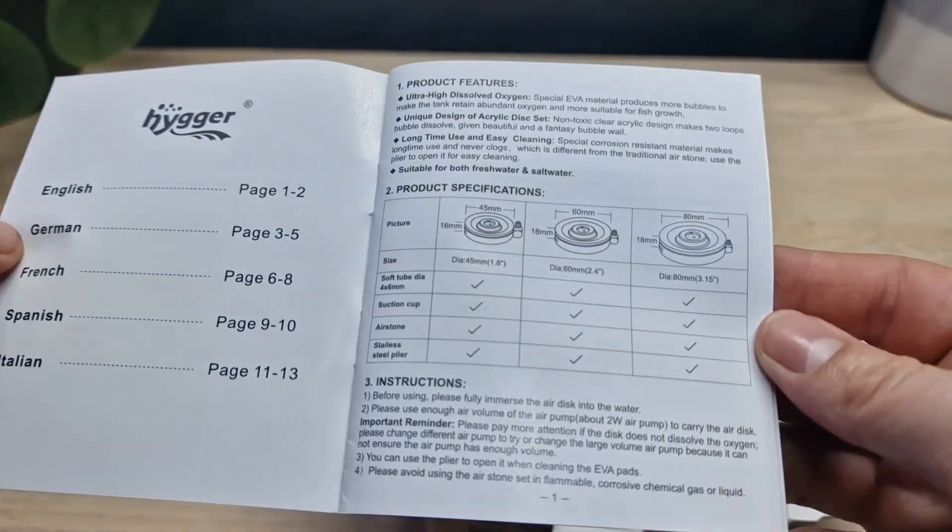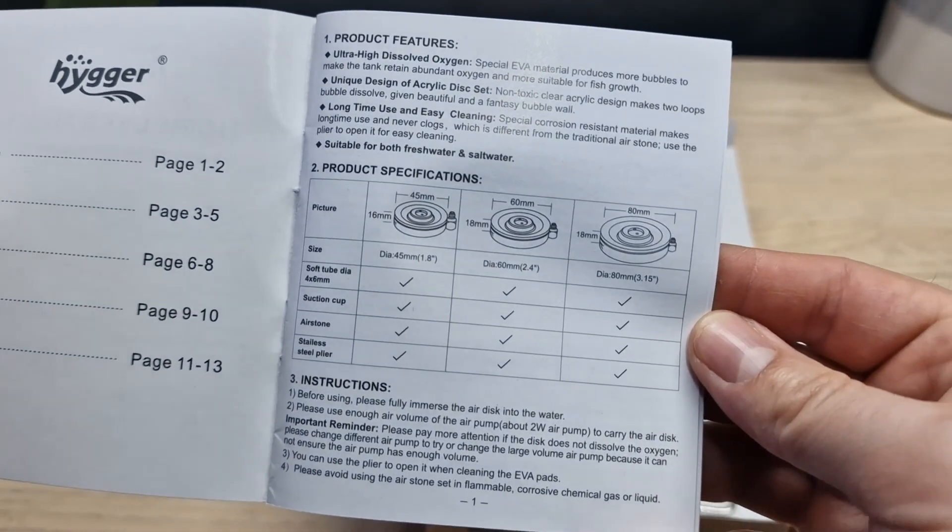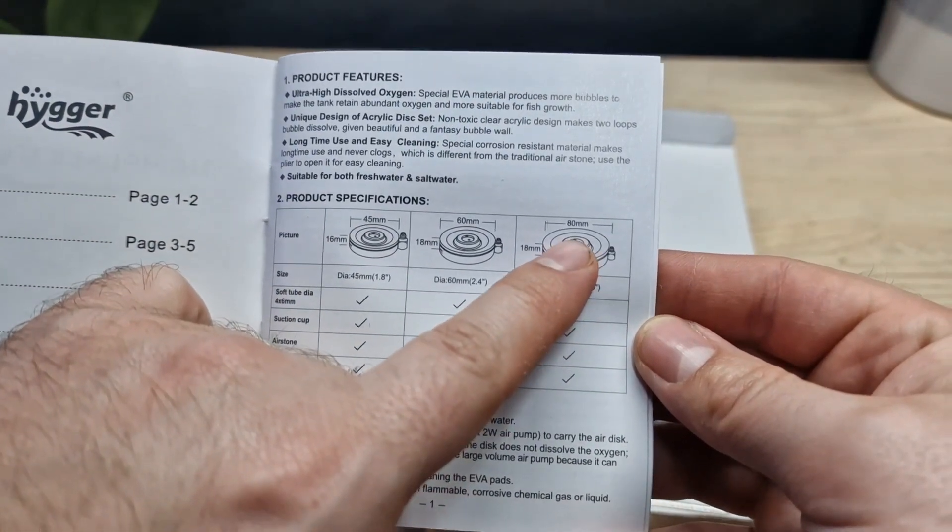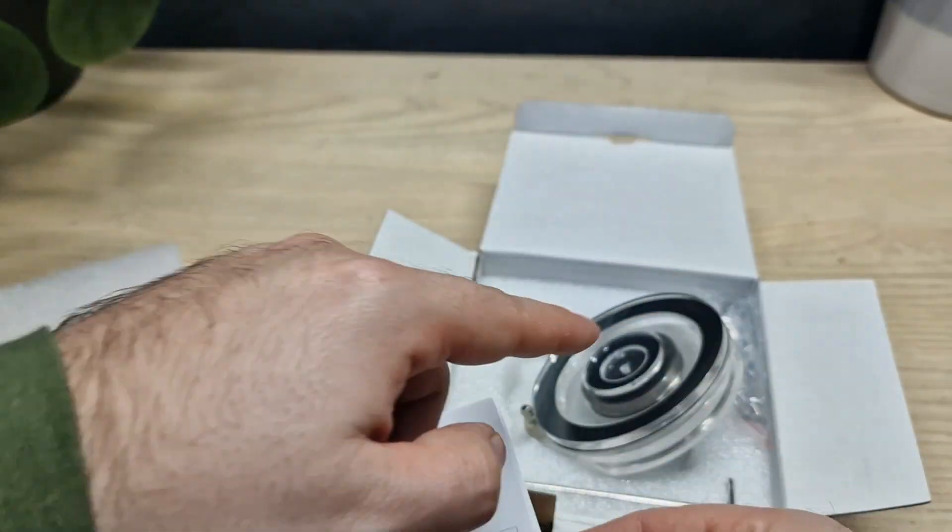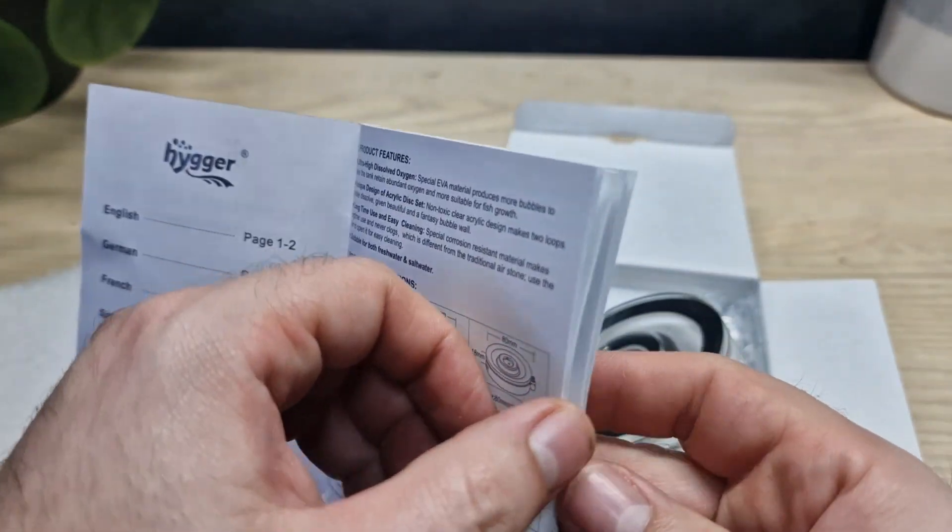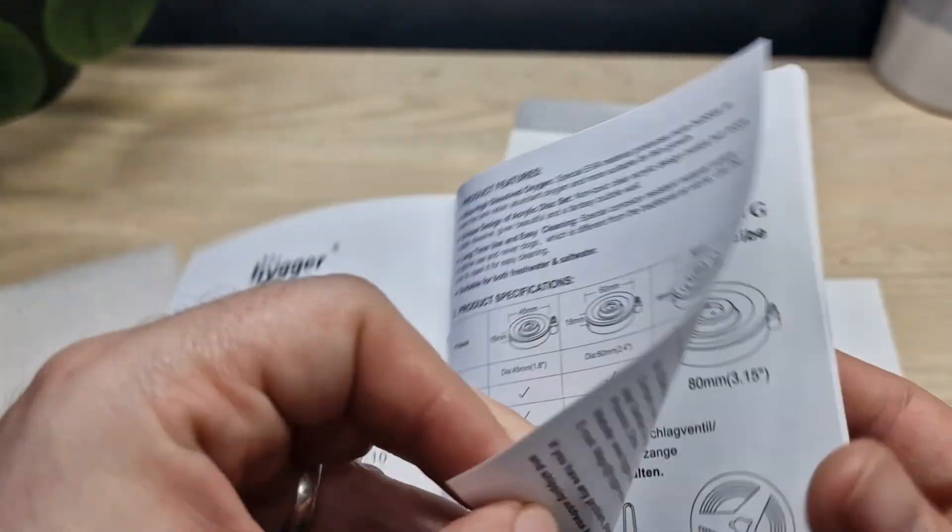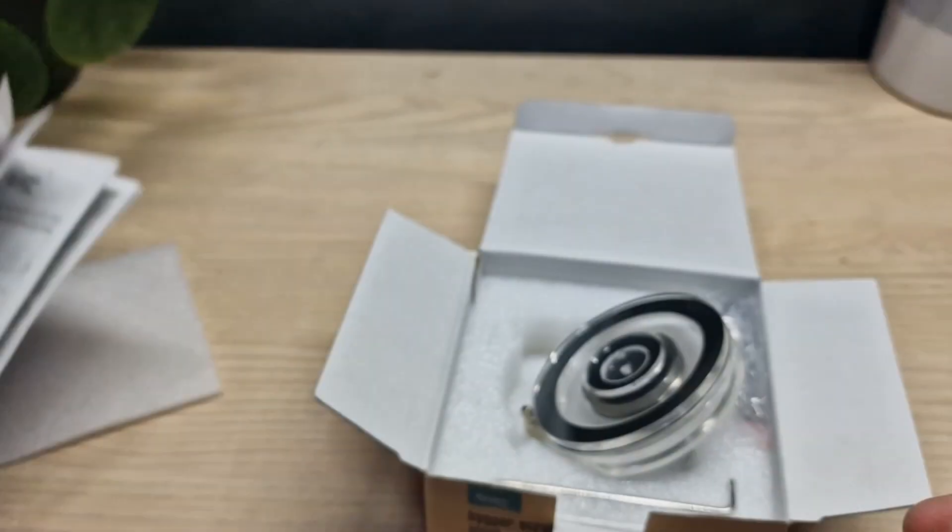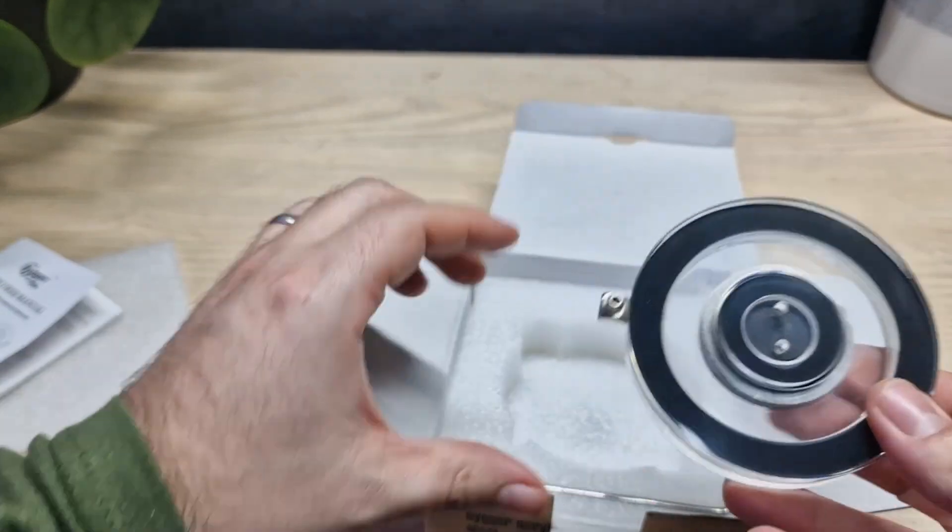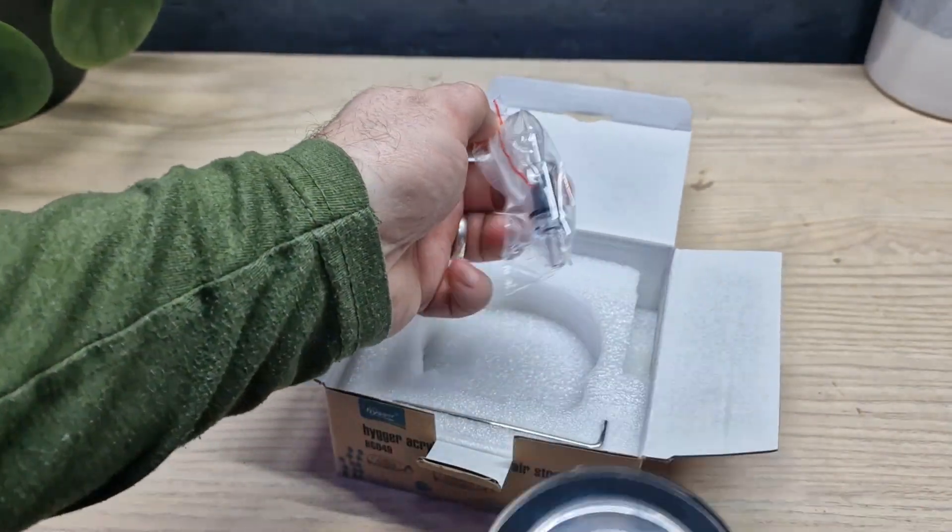In the manual we can see that there are three different sizes. This particular model I've got here is the 80 millimeter one. Goes down to 45, so basically almost half the size of this one. Here's some of the facts from the manual. If you want to read them you can pause the video. Obviously not that interesting. I don't really read manuals very often. Back to this though, this is interesting. What else do we have in the box?